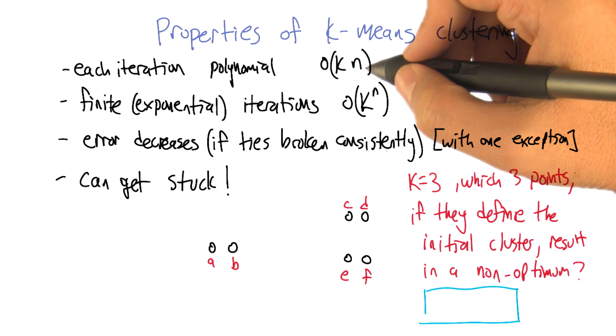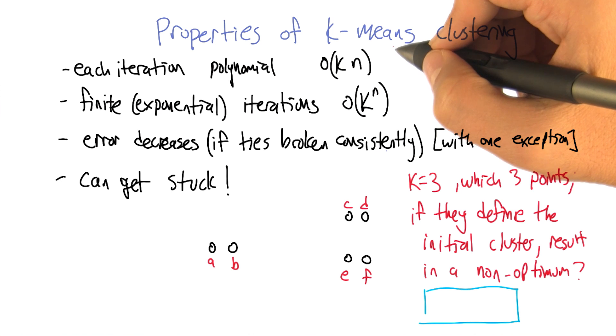There could be an extra factor of d in here, if these are d-dimensional points. Does that make sense?